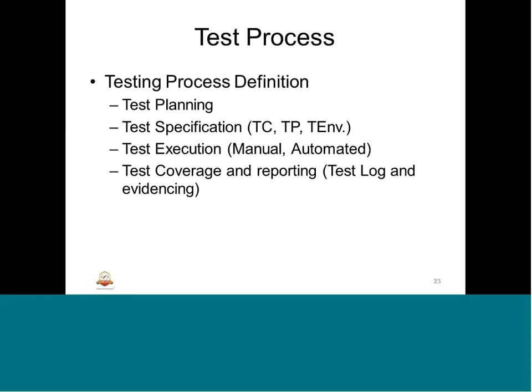The next process is test execution — what methods will be used in terms of test execution; it could be manual or automated. The final process element is test coverage and reporting. Once done with test execution, we need to develop a matrix in terms of coverage — how much of the requirements or functionality have passed, how many have failed, and if there are failures at the system level, those need to be reported. The reporting needs to be evidenced with test logs and execution outputs.